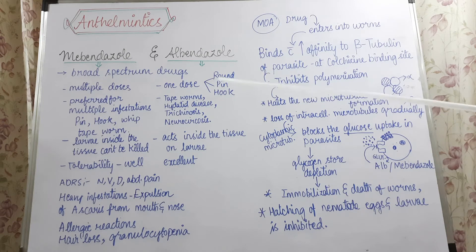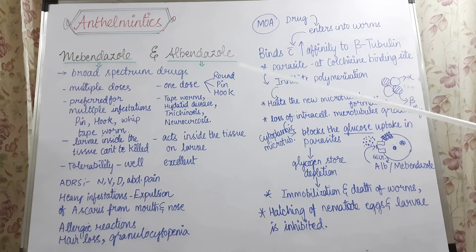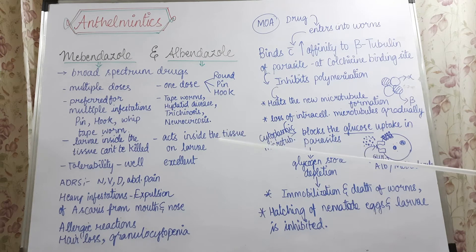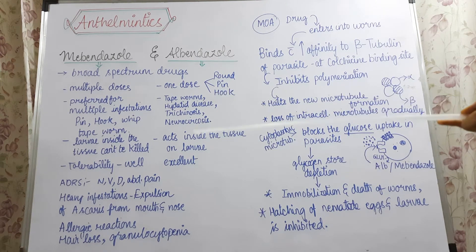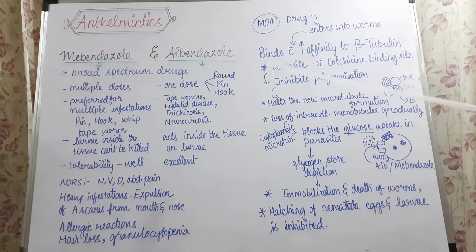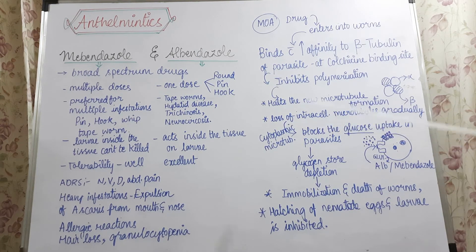Coming to mebendazole, it will show 100% cure in the case of pinworm and hookworm. Whereas, it can only cure 75% in the case of tapeworms. When it comes to larvae, mebendazole cannot kill larvae that are present inside the tissues. Whereas, albendazole is also able to act on larvae present inside the tissue — that is an advantage associated with albendazole.